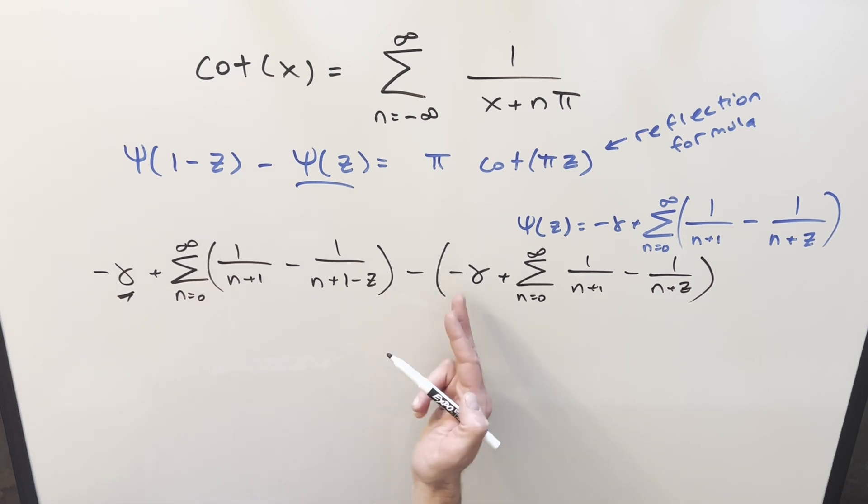But you notice, when we distribute in this minus sign, here this is going to become a plus. So these constants are going to go away, so we don't have to worry about that.